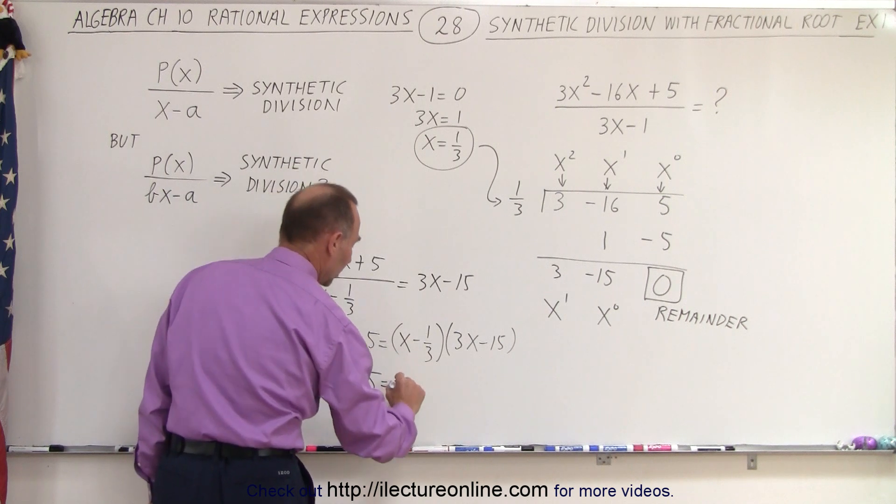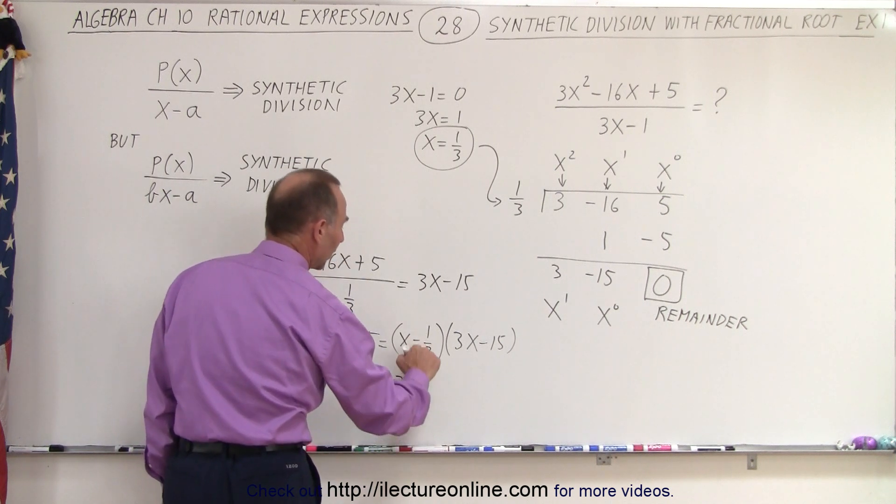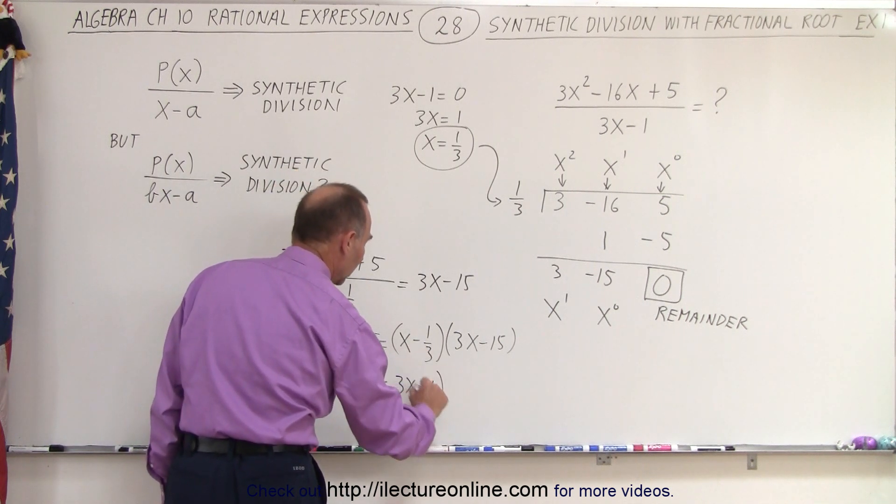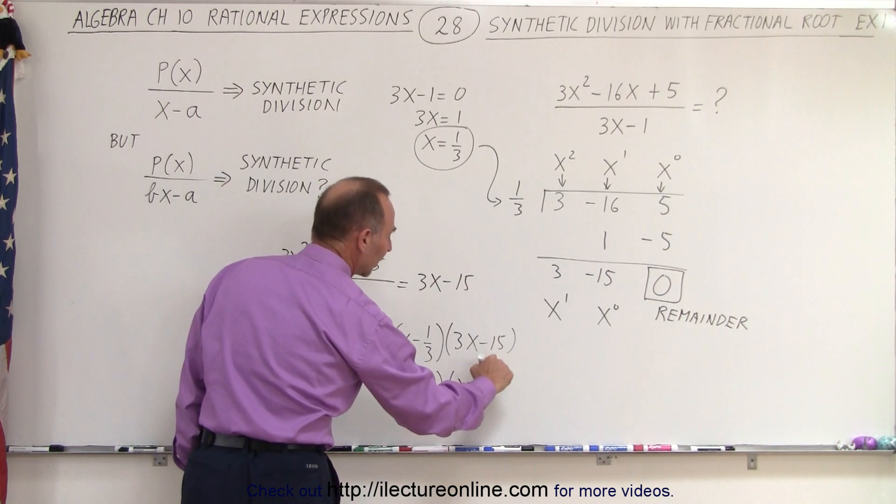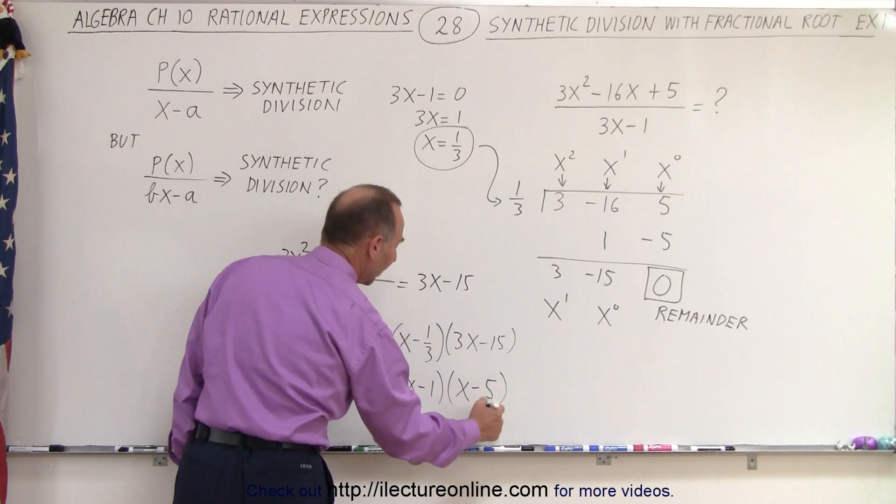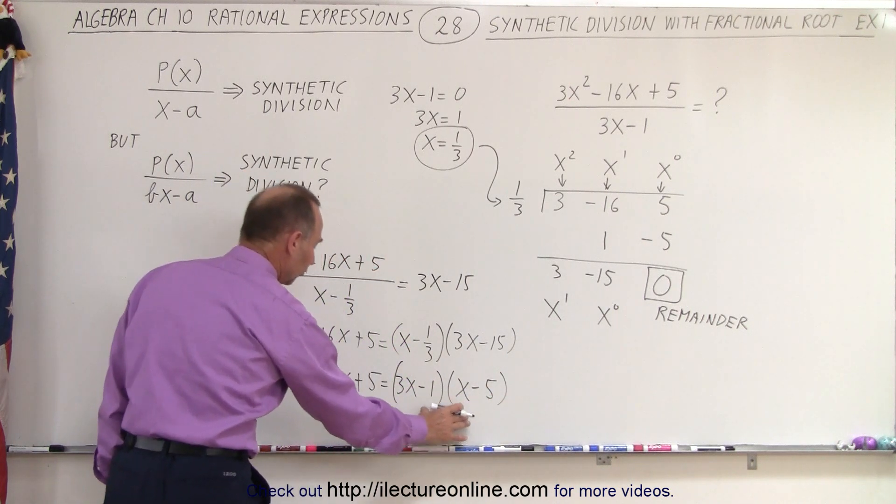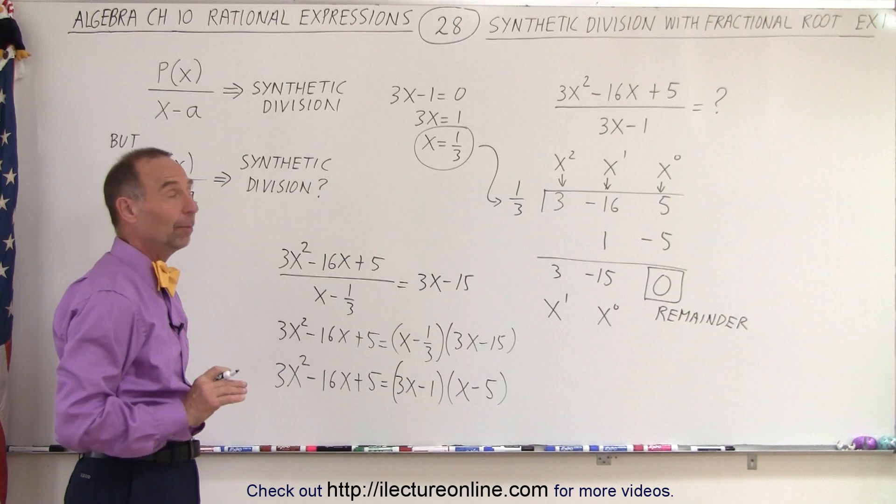We can say that 3x squared minus 16x plus 5 is equal to, multiply this by 3, we get 3x. Multiply this by 3, we get minus 1. And then dividing this by 3, we get x. Dividing this by 3, we get minus 5. And then this is the solution or the factored form of this original problem.